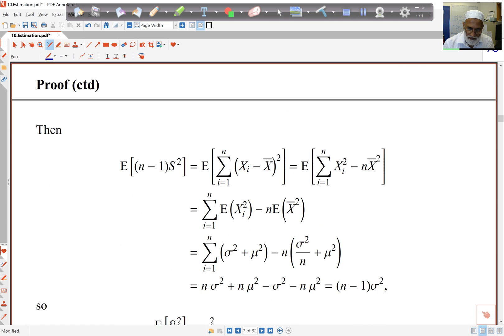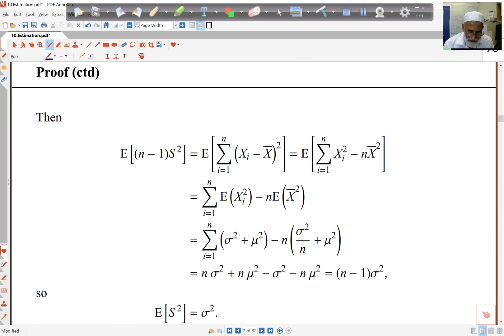If I put all this together now, if I'm taking a look at the expected value of n minus 1 S squared, that's what I have, the expression here. This I know becomes the sum of Xi squared minus n X bar squared. And then if I break up this, I get the sum of the expected values of Xi squared minus n times E of X bar squared.